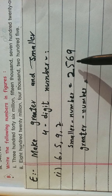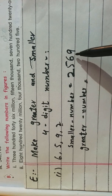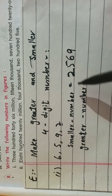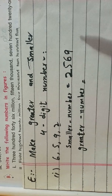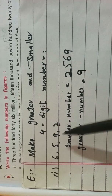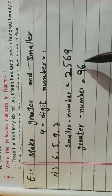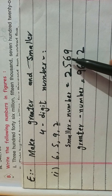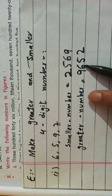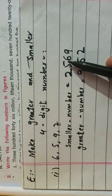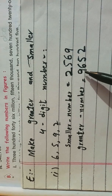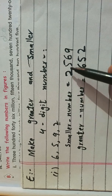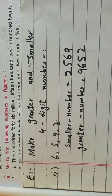So the smallest number is 2569. There is no repetition — we use each digit once. For the greatest number, we use descending order: nine is greatest, then six, then five, then two. So the greatest number is 9652. You can see the difference — the greater number is 9652 and the smaller number is 2569. This is the answer.